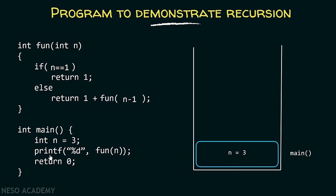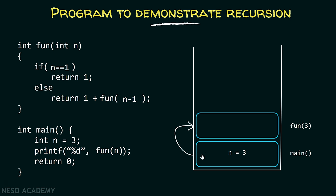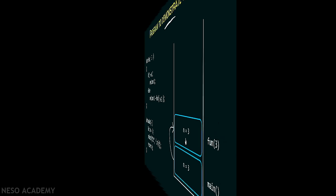After this step, we have a printf function, and inside it we are calling the function fun. The main function is the caller of fun. The value of n is 3, so we are passing value 3. The definition of this function is written here, so from the main function we are calling fun(3). The activation record of fun(3) is maintained in the stack with n equals 3, since n is the parameter of this function.